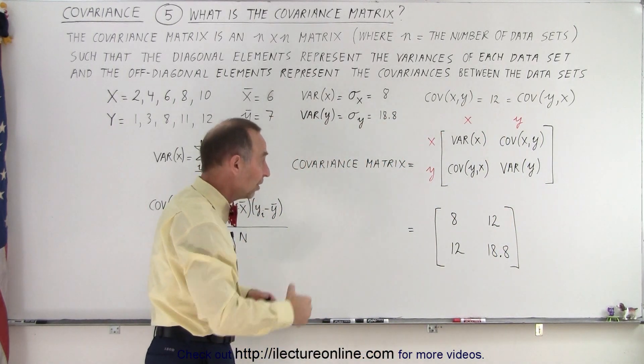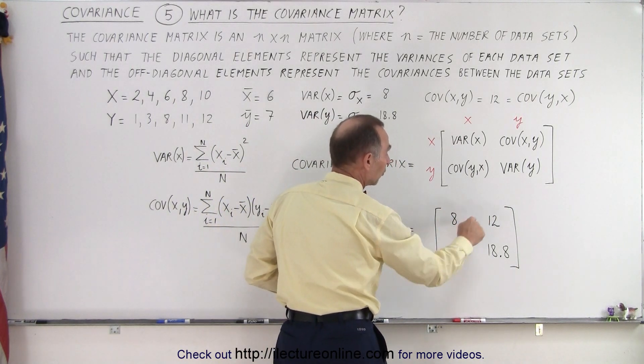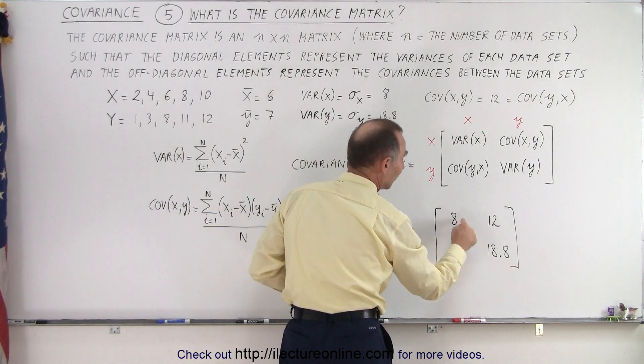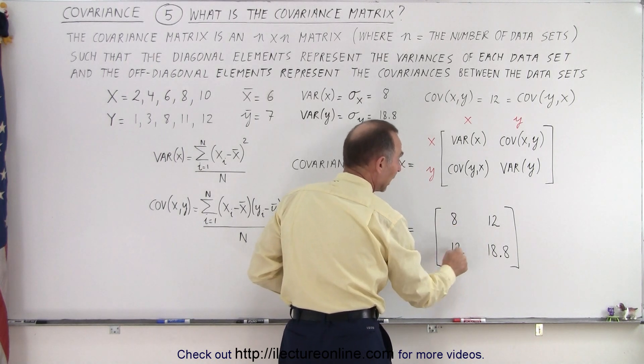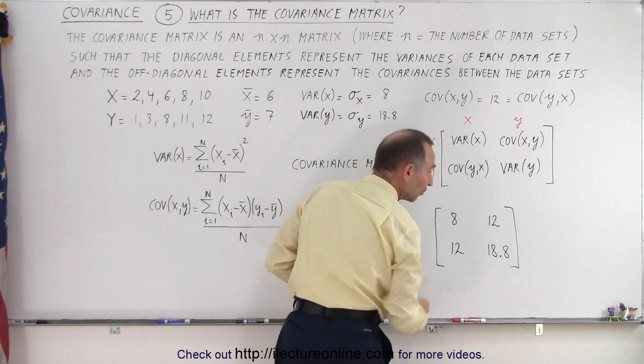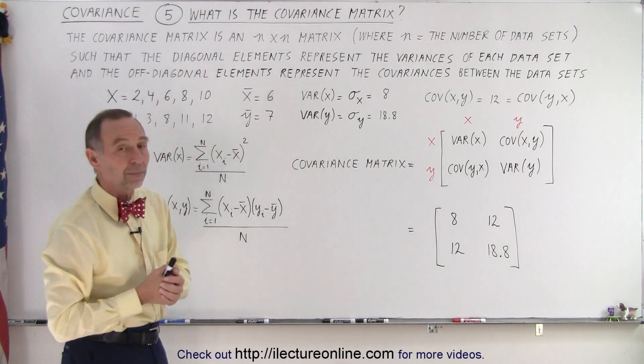When we plug those numbers in, here's the covariance matrix. Notice the diagonals are the variances - the variance of x and the variance of y. Here is the covariance between data sets x and y. That is how it's represented.